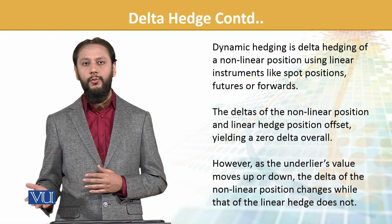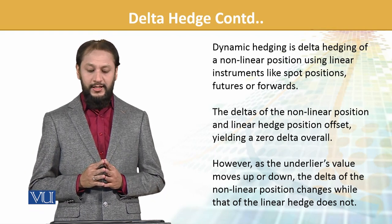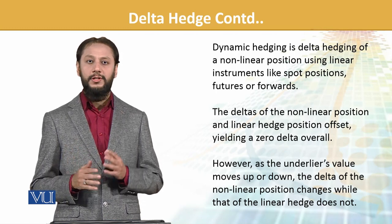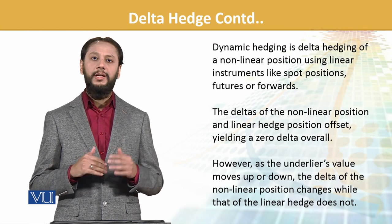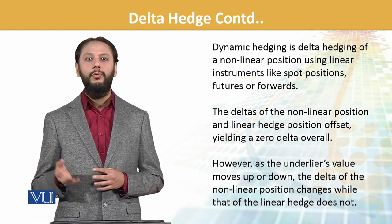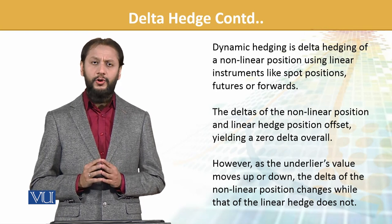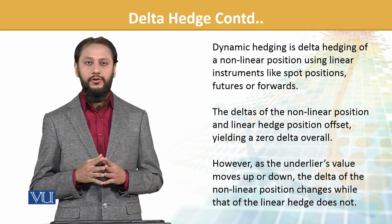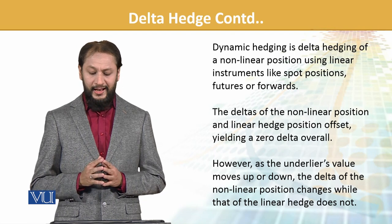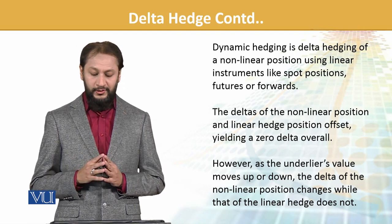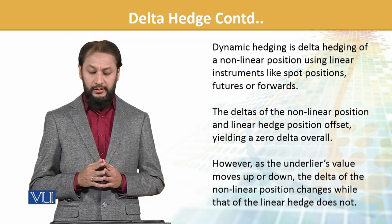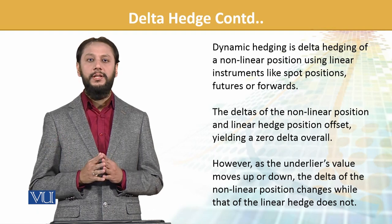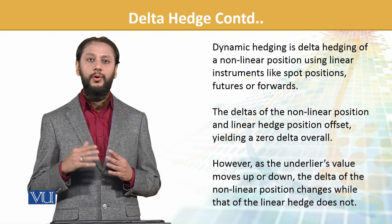Dynamic hedging is the delta hedging of a non-linear position using linear instruments like spot positions, futures, and forwards. Straight سے non-linear means straight path نہیں ہے اور آپ کے instruments جو ہیں وہ straight path کے ہیں. The delta of the non-linear position and linear hedge offsets, yielding zero delta overall — ہم delta neutral کی طرف جانا چاہ رہے ہیں. However, as the underlier's value moves up or down, the delta of the non-linear position changes while that of the linear hedge does not — linear fix مطلب static ہو جاتی ہے، اس میں change نہیں آئے گی۔